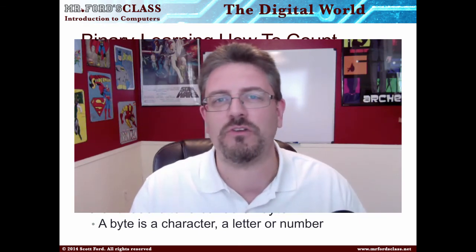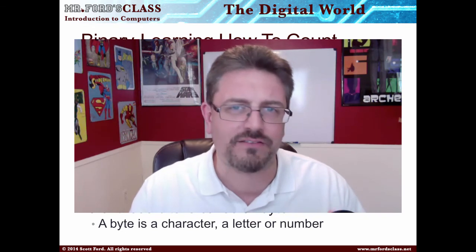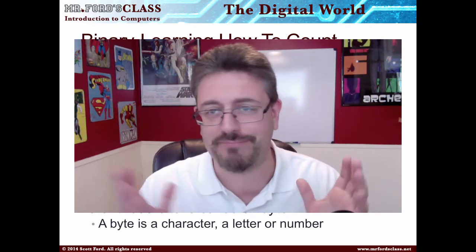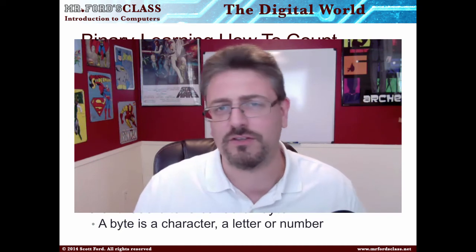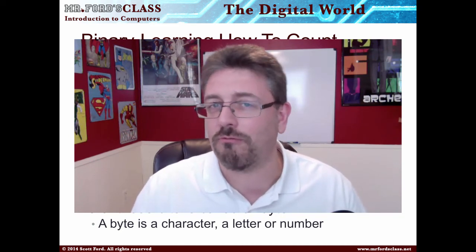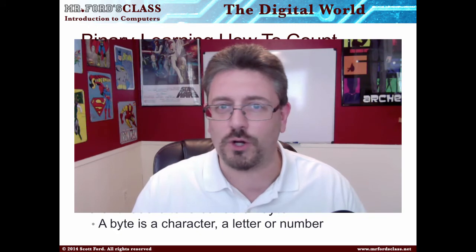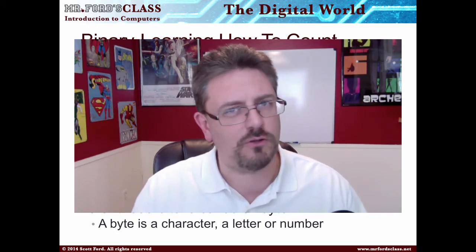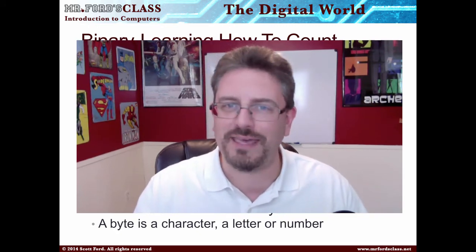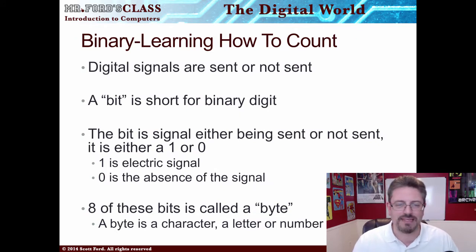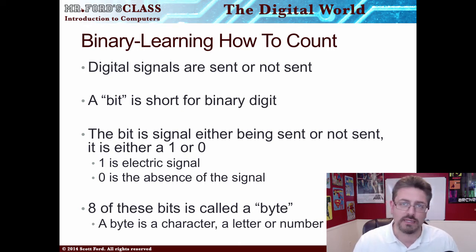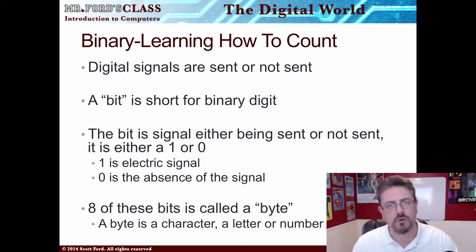You're going to learn terms and you're going to learn technology. You'll find some terms aren't used the right way in everyday language. My advice is to know the right way to use it and the wrong way to use it, and then don't correct people on the street — nobody likes it. So a bit is short for binary digit. A bit is a signal either being sent or not sent, and we represent this by either ones or zeros. One is information being sent — it's an electric signal. A zero is the absence of the signal.